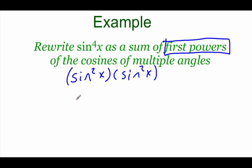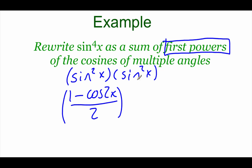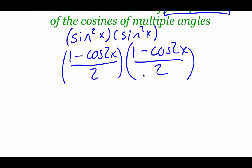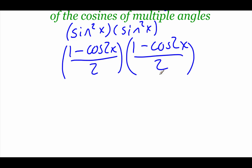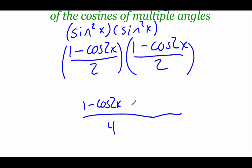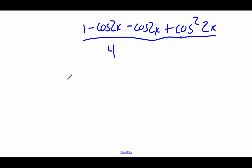For the first sine squared of x, our power reducing formula gives us 1 minus cosine of 2x all over 2, and the same for the other sine squared. Since there's multiplication happening between them, we multiply the fractions on the bottom — 2 times 2 is 4. We FOIL out the top: 1 times 1 is 1; 1 times negative cosine of 2x is negative cosine of 2x twice; and negative cosine of 2x times negative cosine of 2x gives positive cosine squared of 2x.